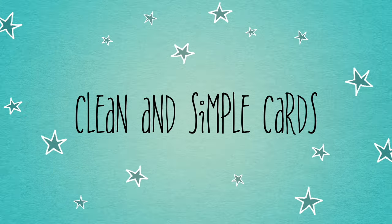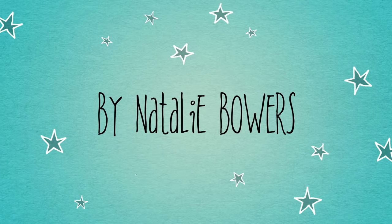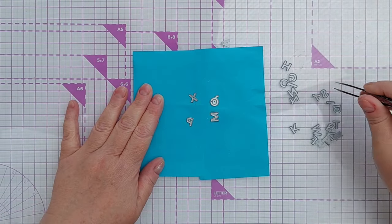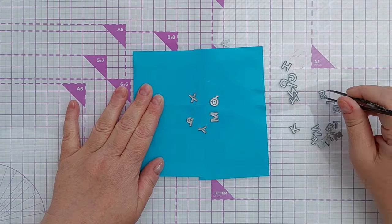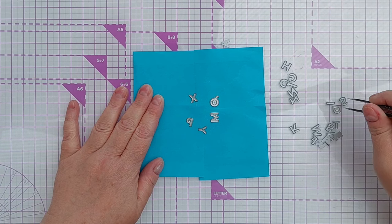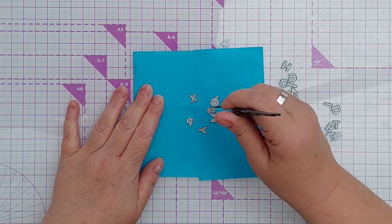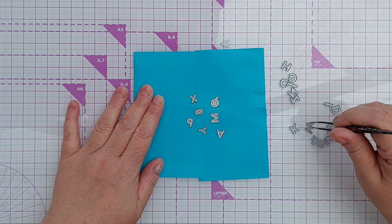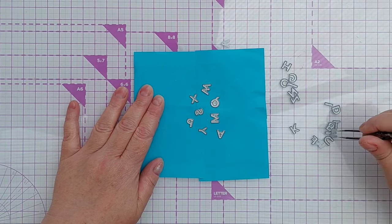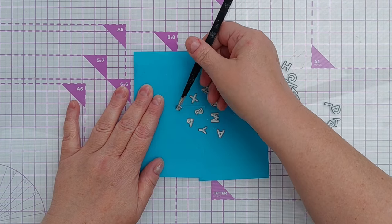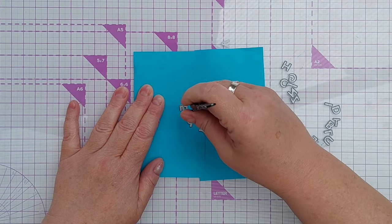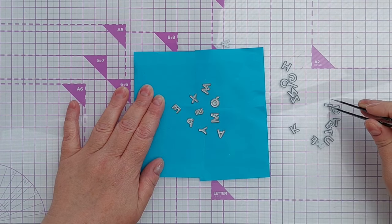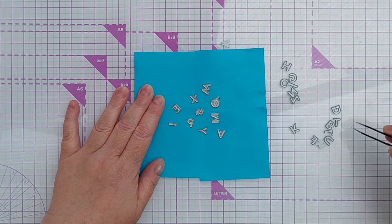Hello crafty friends and welcome to another clean and simple card making video. Today I've got another alphabet die idea for you. If you haven't seen it, I published my top 10 ways of using alphabet dies on clean and simple cards video - I'll leave a link in the description. But in today's video, I've got an 11th way for you: using alphabet dies to make stencils.